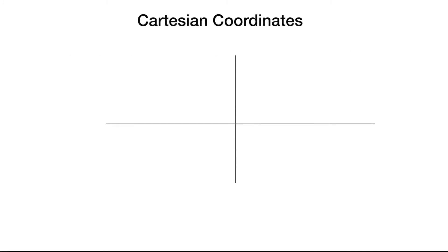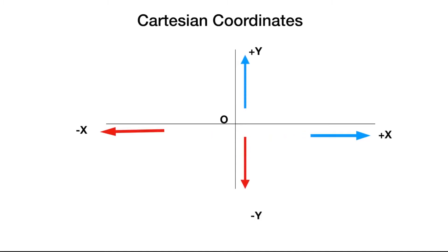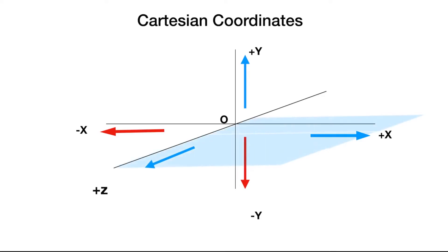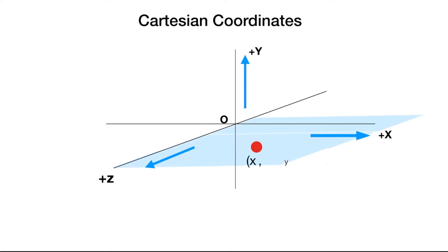We have seen in our previous videos that we generally use the rectangular or Cartesian coordinate system to track the position of an object with time. The position of an object at any instant of time is given by x, y, z coordinates, where x is displacement on the x-axis, y on the y-axis, and z on the z-axis.